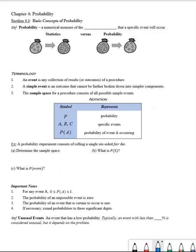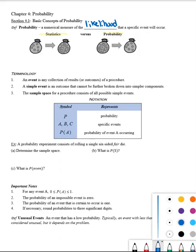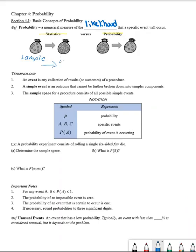To start off with the definition that we use for probability, we are looking at either a statistic or probability. A probability is a numerical measure of the likelihood that a specific event will occur. Now, with a statistic, we basically look at a sample, and from that sample we can then make an inference about something in the population.